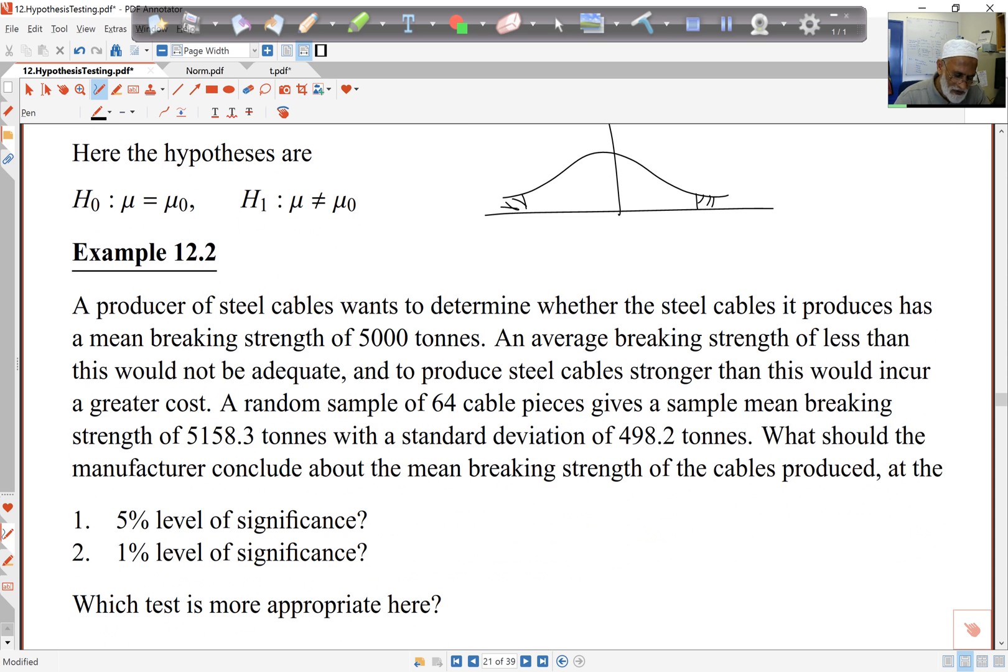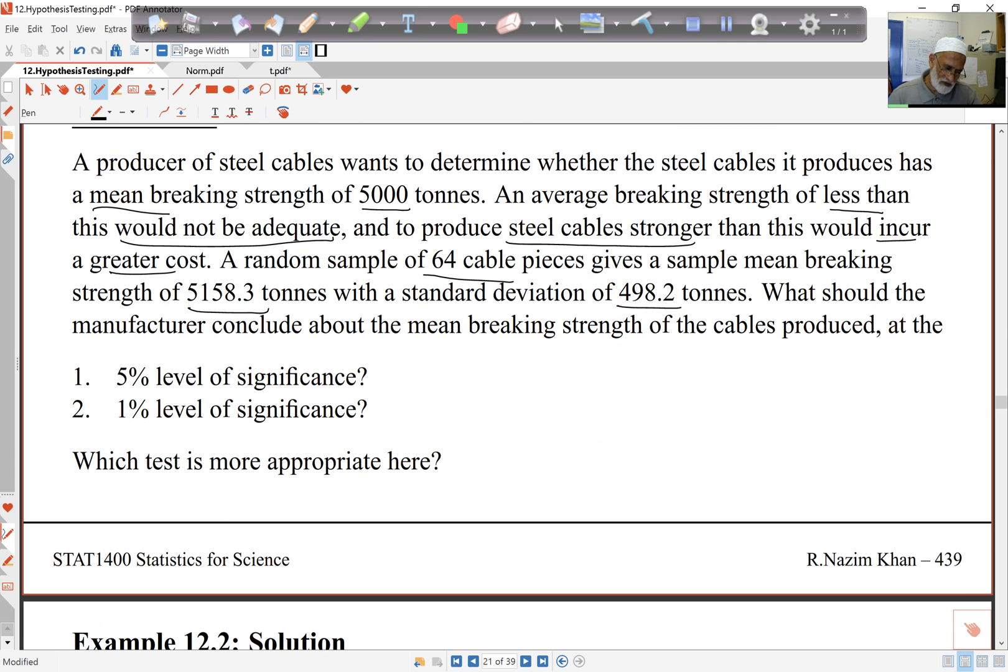Here's an example. The producer of steel cables wants to determine whether the steel cables it produces has a mean breaking strength of 5,000 tons. Average breaking strength of less than that means that this is too weak, and to produce stronger than that would mean we incur extra costs. So we want it to be exactly 5,000, not too large, not too small. A random sample of 64 cables gives us a sample mean of that much and standard deviation of that much. What do you conclude? We're going to try it at both 5% and 1% level of significance.